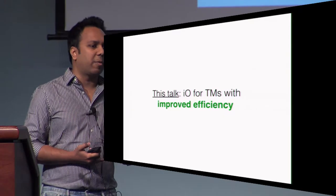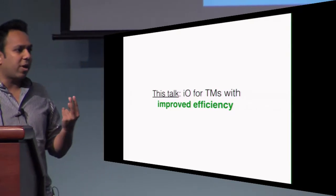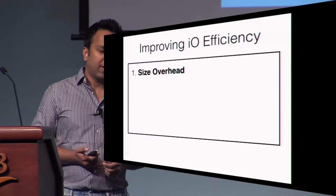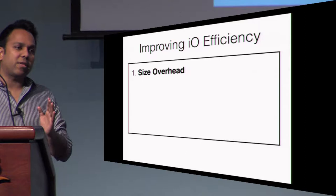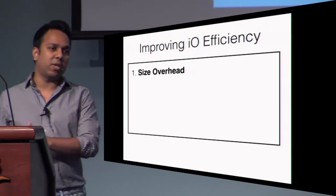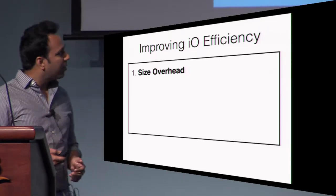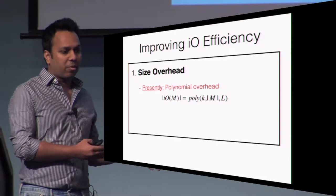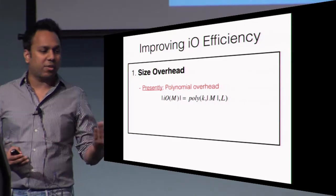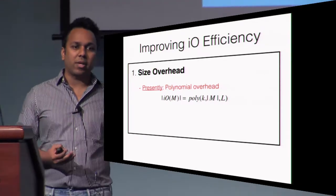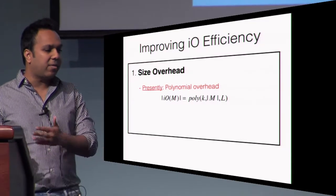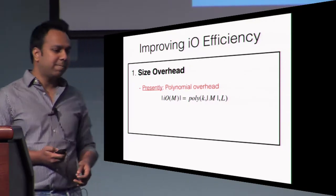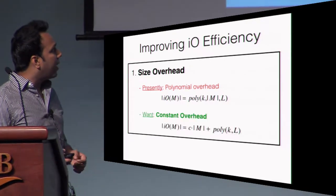Let me elaborate what I mean by better efficiency. We are interested in two problems. The first problem is about size efficiency — we are interested in comparing the size of the obfuscated program relative to the size of the unobfuscated program. If we look at the results so far, they incur polynomial overhead in the size of the underlying program. That is, the size of the obfuscation of some program M is polynomial in the security parameter, the size of the program M, and some parameter L which denotes the upper bound on the input length.